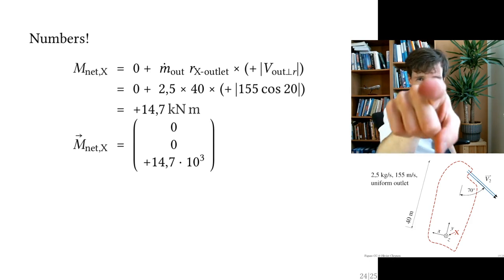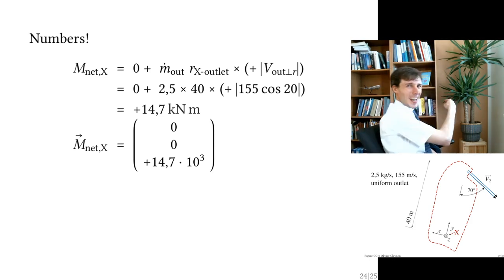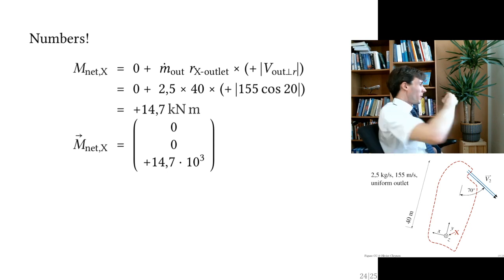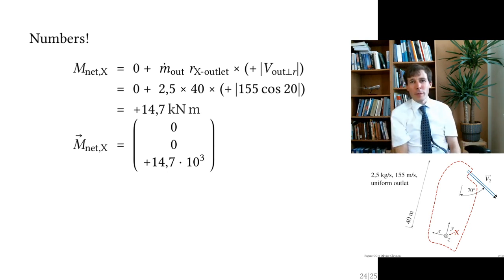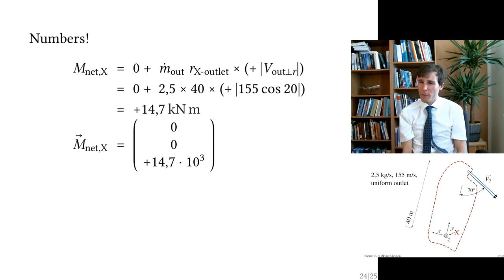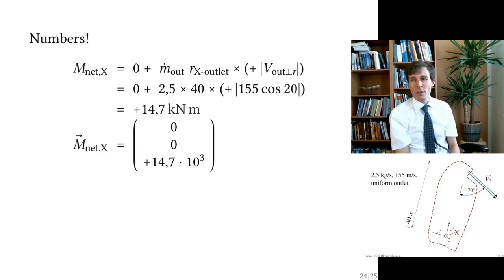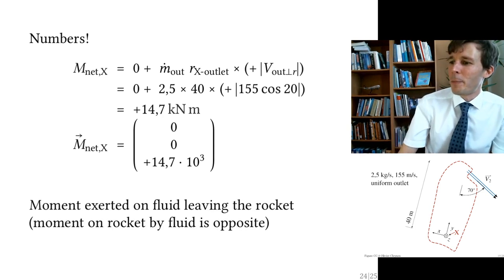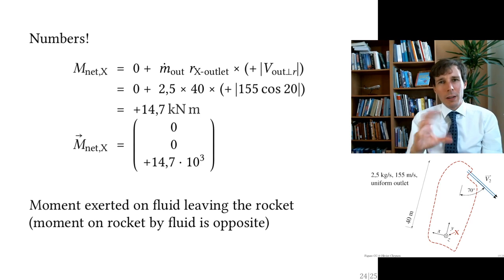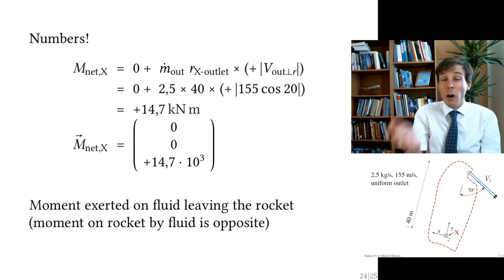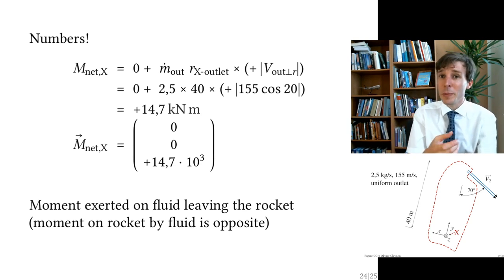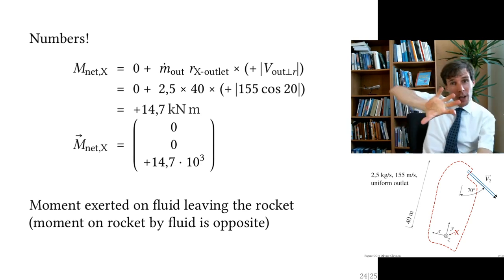If it were negative, it would point toward the viewer; here it points outward with a magnitude of 14.7 kN·m. The moment exerted by the fluid on the rocket is exactly the opposite — pointing toward you.